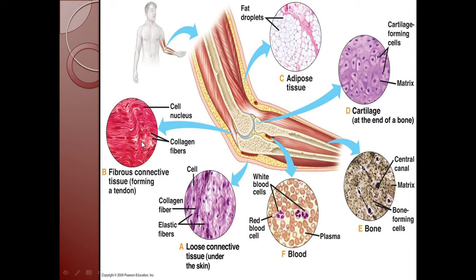You can also see the fibrous connective tissue, which forms the tendon and consists of cell nuclei as well as collagen fibers. Then you can see adipose tissue, which consists of fat droplets. Here the cartilage tissue is found at the end of the bone. Then you can see the bone tissue, and inside you can see blood. These are the various kinds of connective tissue found in the body of an individual.